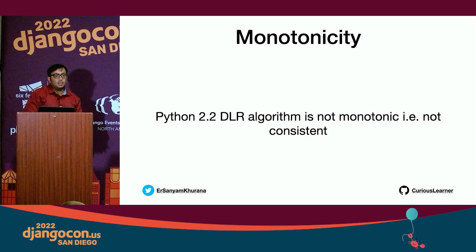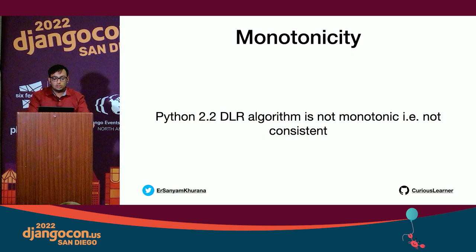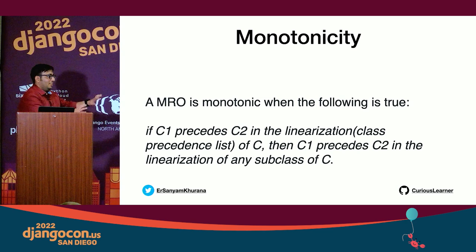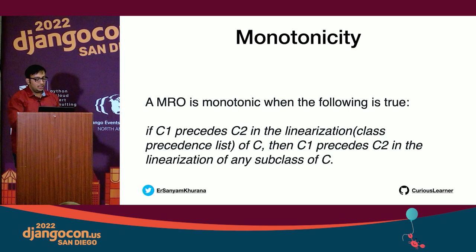This decision was made because of something known as monotonicity. Python 2.2's DLR algorithm was not monotonic — it wasn't consistent. The consistency criterion means: if C1 precedes C2 in the linearization of class C, then C1 must precede C2 in the linearization of any subclass of C. In simple terms, a parent class cannot come before a child class in the inheritance hierarchy — you always look upwards, not downwards first.